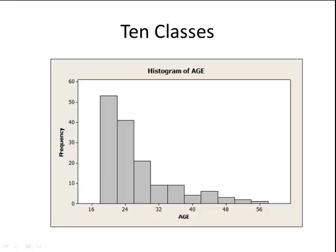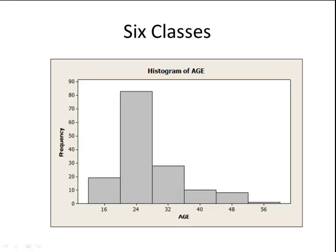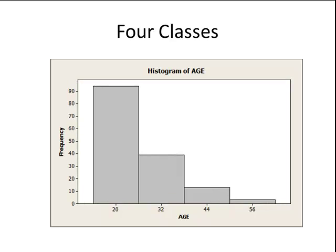So what if we decrease it? We go to 6. See how the histogram shape changes. Let's look at 4 classes. So you have to sort of decide how many classes do you need for your data set. If you have too few, like in this case, we don't get a good summary. If we choose too many classes, then the bins would be spread apart and it's not a good summary of the data.